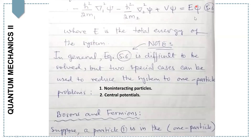This equation is difficult to solve, but two special cases can be used to reduce the system to a one-particle system. First, non-interacting particles. Second, central potentials.